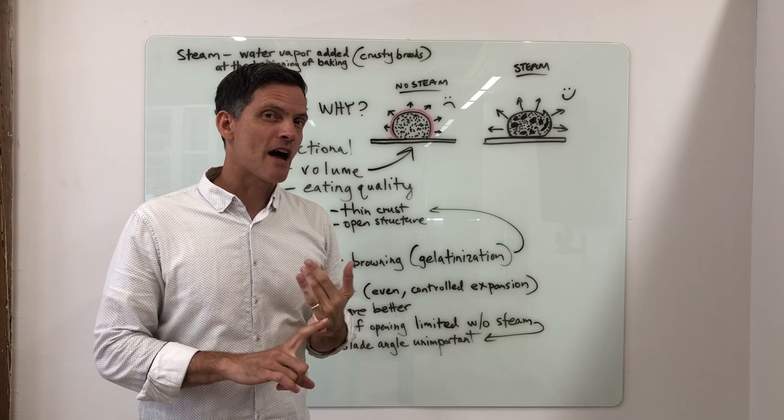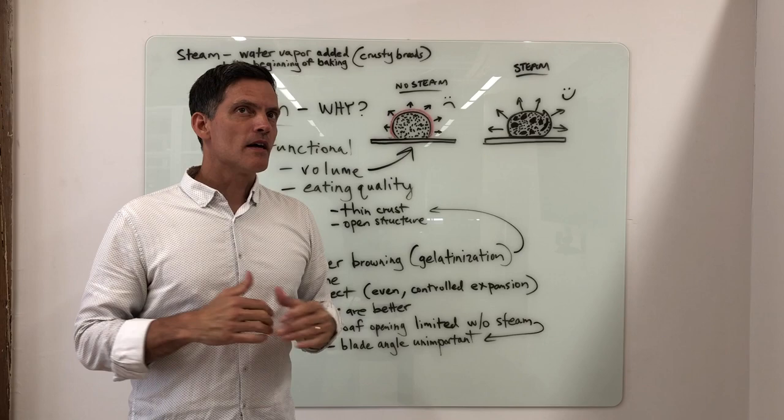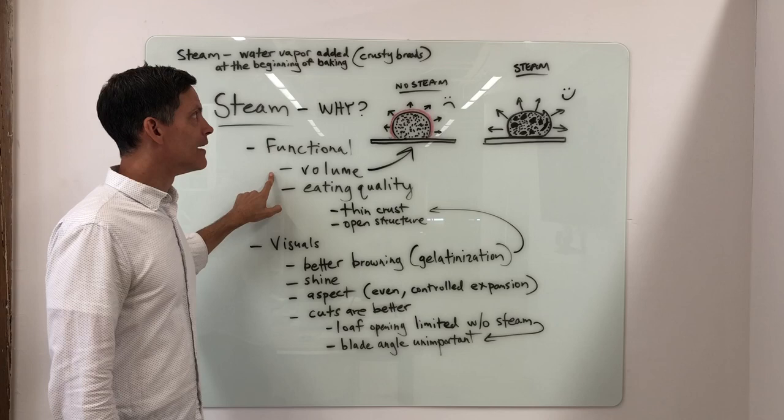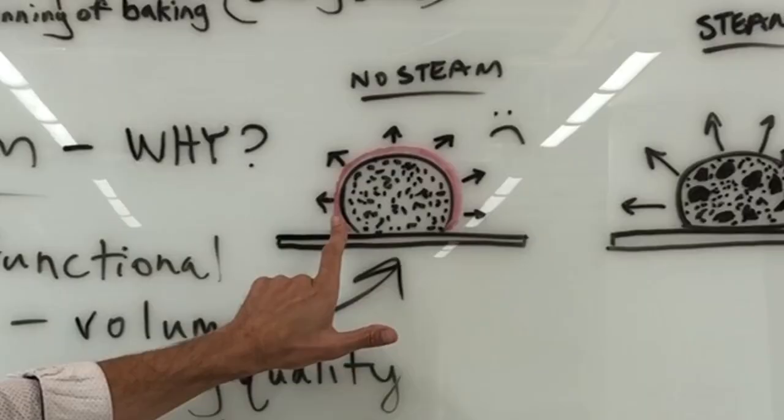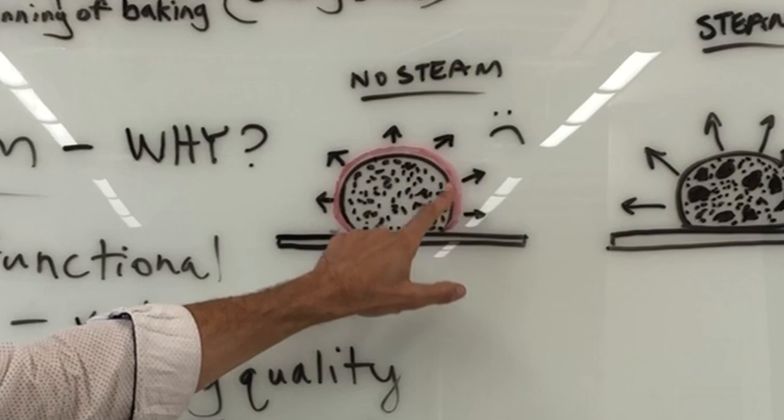So why do we steam? There are quite a few reasons, and the most important is functional. Baking with steam improves volume. Why? If we load a loaf in an oven with no steam, the crust will immediately dry and set, and that impedes the loaf's ability to expand because it's like putting a straitjacket on the loaf.